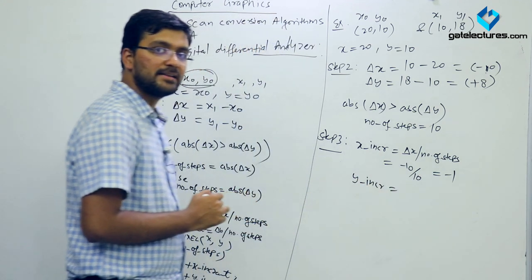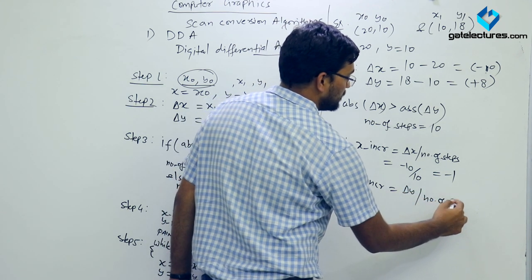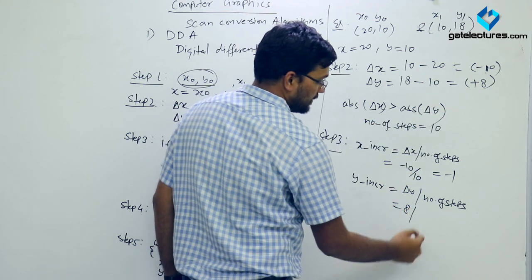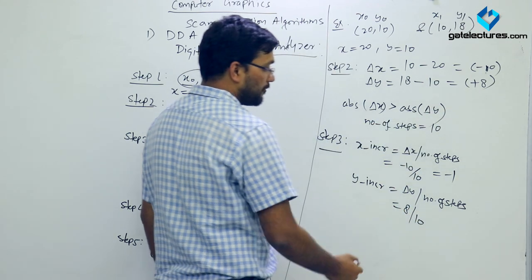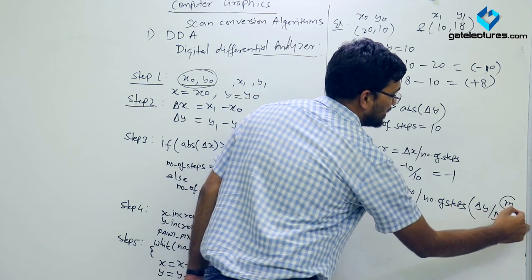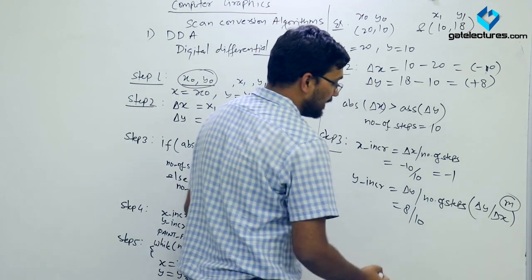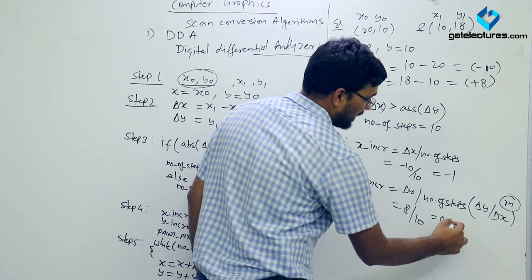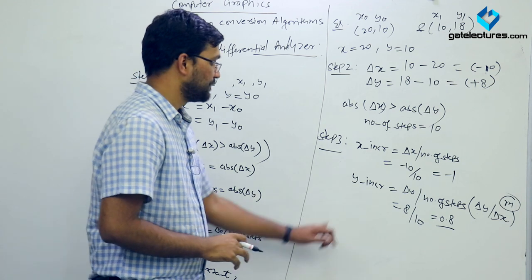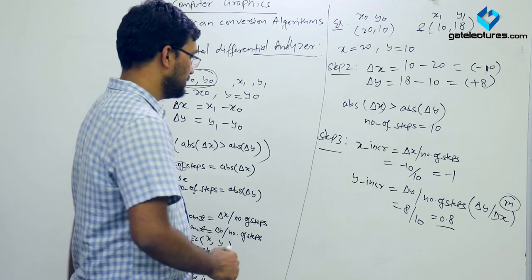The Y increment factor = DY / number of steps = 8 / 10 = 0.8. Note that this is also the slope of the line (DY / DX). For simpler calculations you can keep it as 8/10 or compute it as 0.8. So we have our X increment factor (−1) and Y increment factor (0.8).